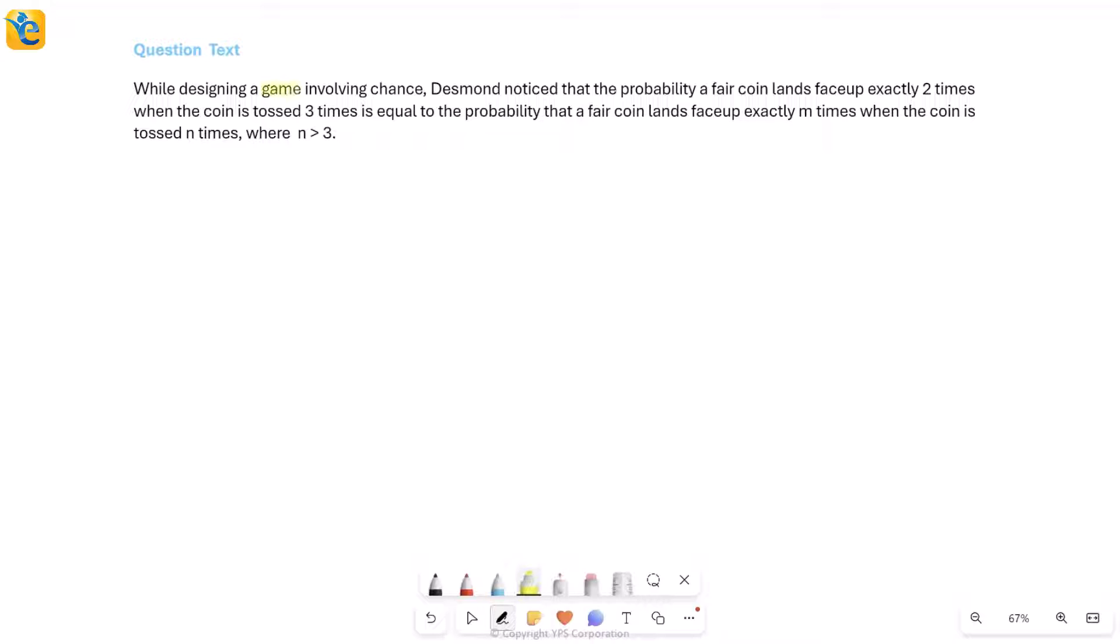Let's start reading this. The situation is that Desmond is designing a certain game, and when he is designing this game, he noticed something. What did he notice? He noticed the probability of a fair coin landing face-up exactly two times when the coin is tossed three times is equal to another probability. Notice how this entire yellow thing is a complicated way of simply saying I'm talking about the probability that the coin lands face-up two out of three times.